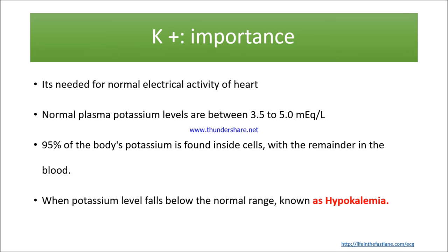The normal value is 3.5 to 5.0 milliequivalents per liter. 95% of the body's potassium is found inside the cells, with the remainder in the blood. When the potassium level falls below normal — less than 3.5 — we recognize it as hypokalemia.